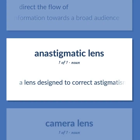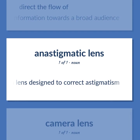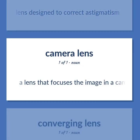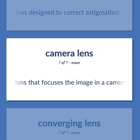Lens types: a lens designed to correct astigmatism. Also: a lens that focuses the image in a camera.